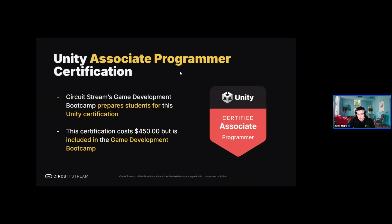In terms of the Game Development Boot Camp specifically, you get additional certification through Unity. You have to write an exam to gain this certification, which generally costs about $450 — and that cost is built into our development boot camp. So you'd be certified through Circuit Stream and the university partner, and then you can take it one step further: the education in our boot camp prepares you to write the Unity test, and if you pass you get direct certification from Unity as well. We actually worked with Unity early on to help them create their levels of certification directly through Unity, so we're very closely tied with them.